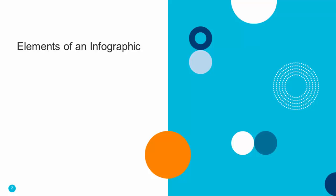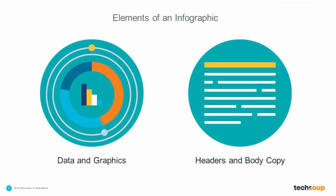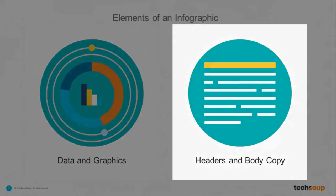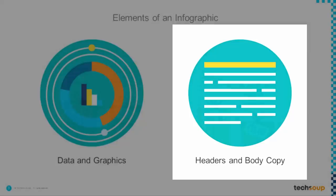When you break down the contents of any infographic, they fall into just two categories: data and graphics, and headers and body copy. The first category includes charts, graphs, and other data visualizations, but also photos and illustrations to serve your larger point. The second category is your title, subheaders, and the text that puts the whole graphic and its component parts into context.